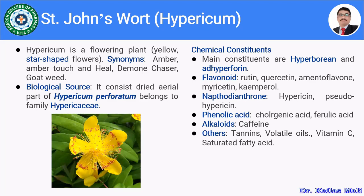Moving towards the biological source of St. John's Wort: it is obtained from the aerial parts of Hypericum perforatum, which belongs to the family Hypericaceae. See the image — you will understand how the aerial parts look, along with its flowers which are yellow in color and star-shaped.